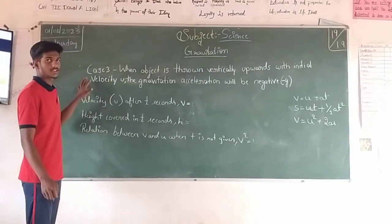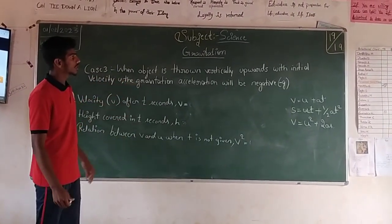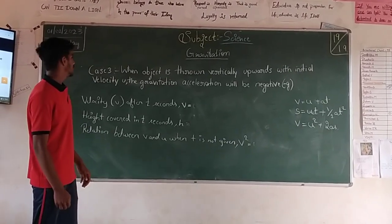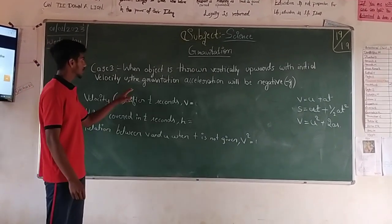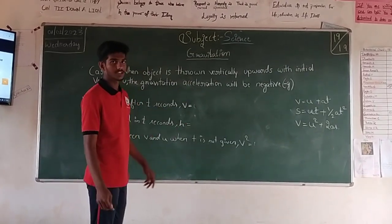Now I am going to explain case 3. When an object is thrown vertically upwards with initial velocity U, the gravitational acceleration will be negative G.